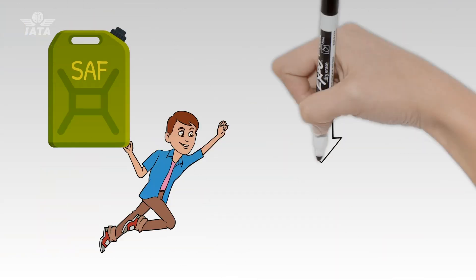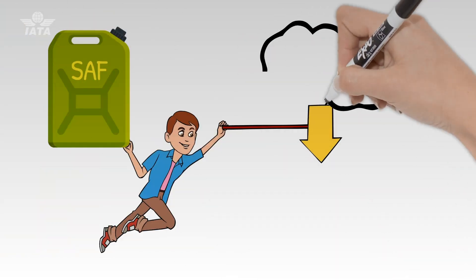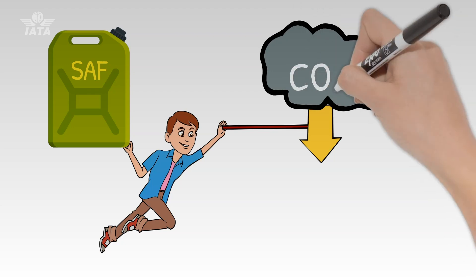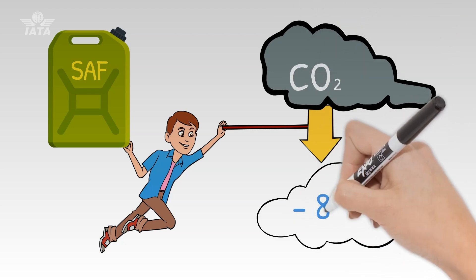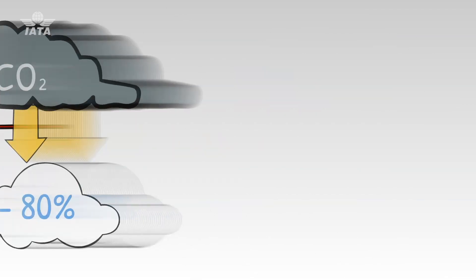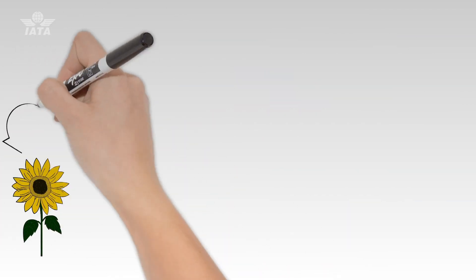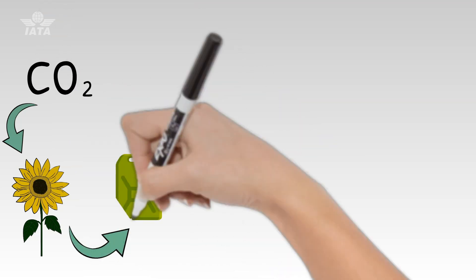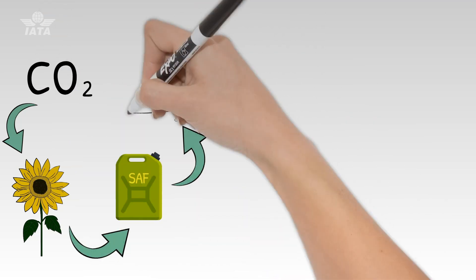The most important benefit of SAF is that it reduces life cycle emissions of carbon dioxide, CO2, which is one of the world's most dangerous greenhouse gases, by up to 80%. How? When a plant grows, it absorbs CO2 from the atmosphere. But when it's burned as jet fuel, it releases that CO2 back again.